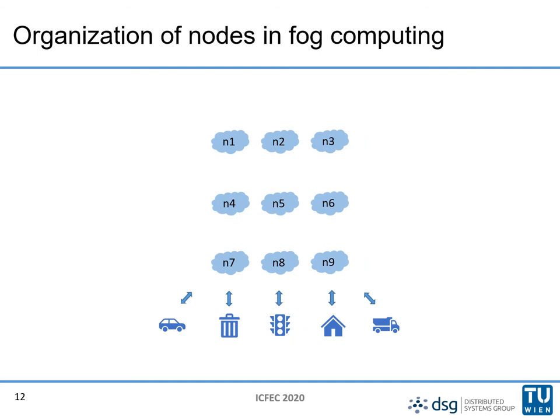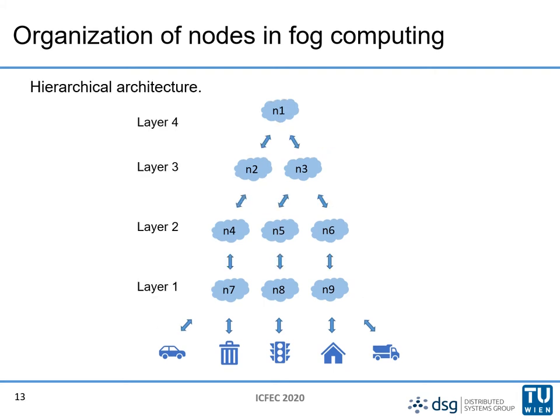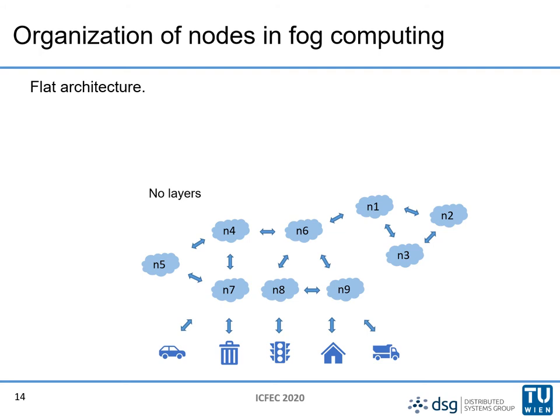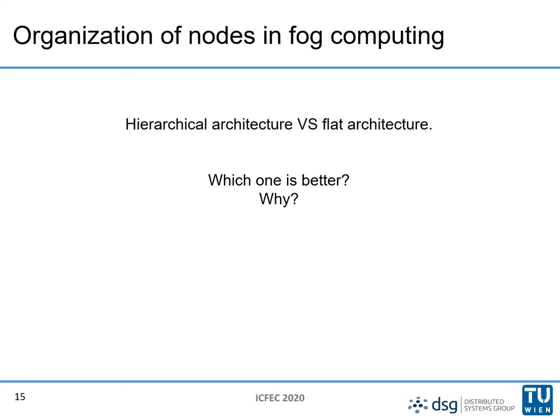From now on we will discuss the organization of all these compute nodes. Based on the literature, the most common way to organize the different compute nodes in fog computing is using the hierarchical architecture, where the nodes are arranged in layers. Another way to organize the nodes is using a flat architecture, where there are no layers. So the question arises: which architecture should we prefer and why?